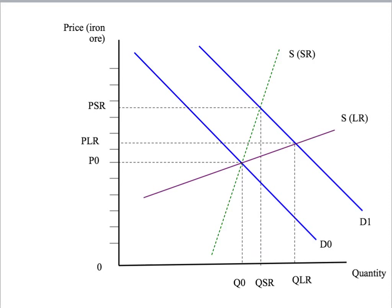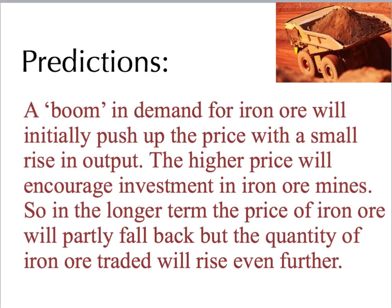So now we can make our predictions. In the short run, we predict that the increase in demand for iron ore from China will lead to a big increase in price on the world market, but a relatively small change in the amount of iron ore traded. However, in the longer term, we expect to see the price of iron ore come back down again — not all the way to the original price level, but down to PLR — and we expect to see a big increase in the amount of production and iron ore traded on the world market. In summary, a boom or increase in demand will initially push up price with a small rise in output. The higher price will encourage investment in iron ore mines, so that in the longer term the price partly falls back, but the quantity of iron ore traded rises even further.